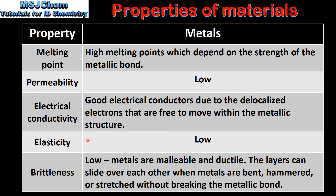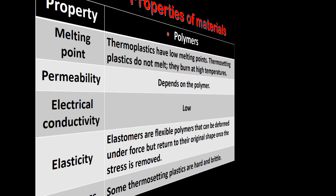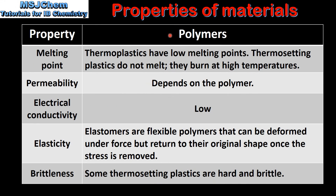Metals have low elasticity and brittleness is also low. Metals are malleable and ductile. The layers can slide over each other when metals are bent, hammered or stretched without breaking the metallic bond.